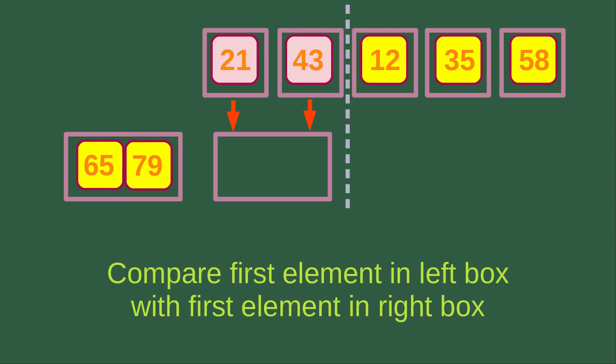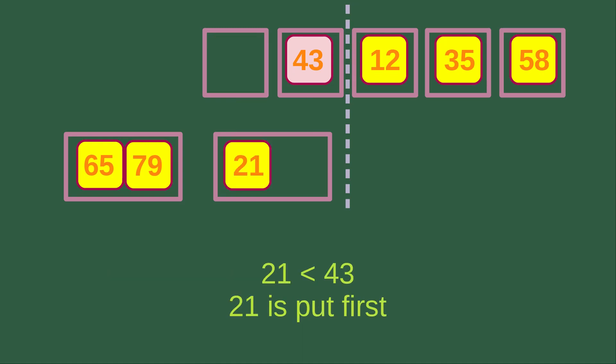Now we are going to compare the next two elements on the left-hand side of the dashed line. We follow the rule to compare the first element in the left box with the first element in the right box. So we are going to compare 21 with 43. We see that 21 is smaller than 43, so we put 21 into the merging box first.